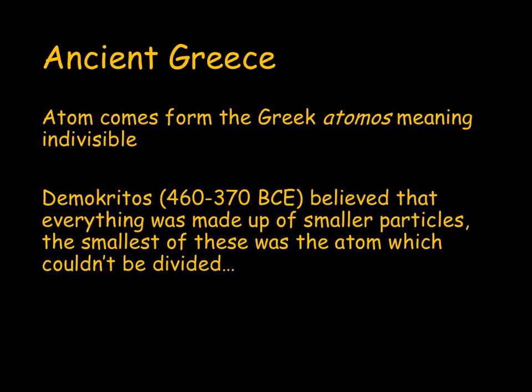The word atom comes from the Greek word atomos, meaning indivisible, so it was the smallest possible particle. Democrates believed that everything was made up of smaller particles. The smallest of these was the atom, which couldn't be divided. Obviously, nowadays, we know that the atom does have even smaller particles in it, such as protons, neutrons, and electrons. However, he believed that they were the smallest particle. His ideas wouldn't really be looked at again until the start of the 19th century with John Dalton.